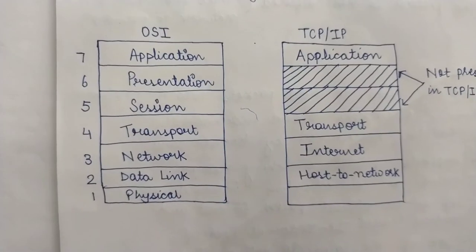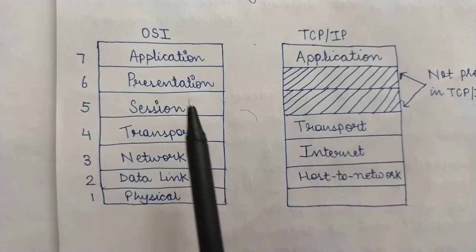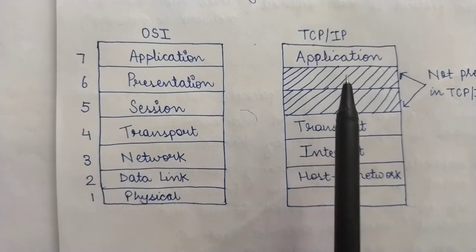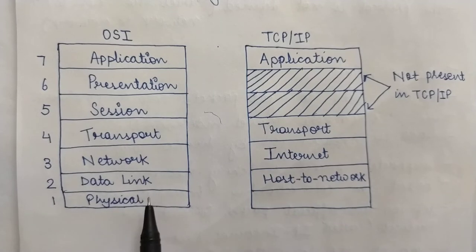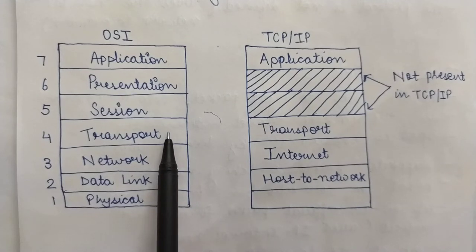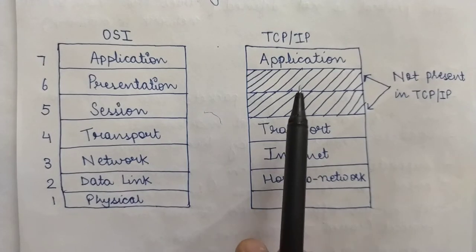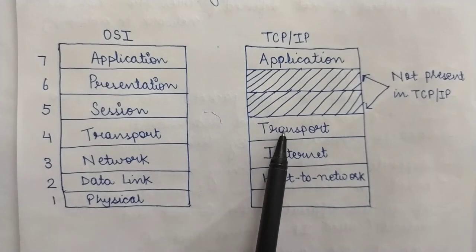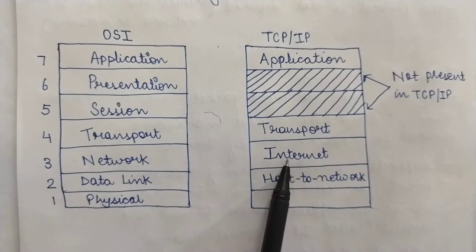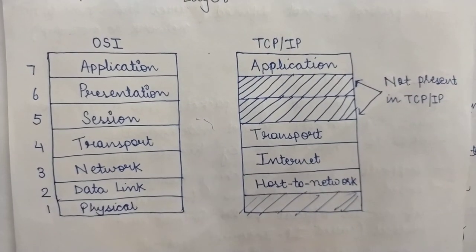I will explain it through a diagram. We have made two diagrams to allow a better comparison between the OSI reference model and the TCP/IP reference model. The OSI reference model has seven layers: the physical layer, the data link layer, the network layer, the transport layer, the session layer, the presentation layer, and the application layer. The TCP/IP model has only four layers: the application layer, the transport layer, the internet layer, and the host-to-network layer.